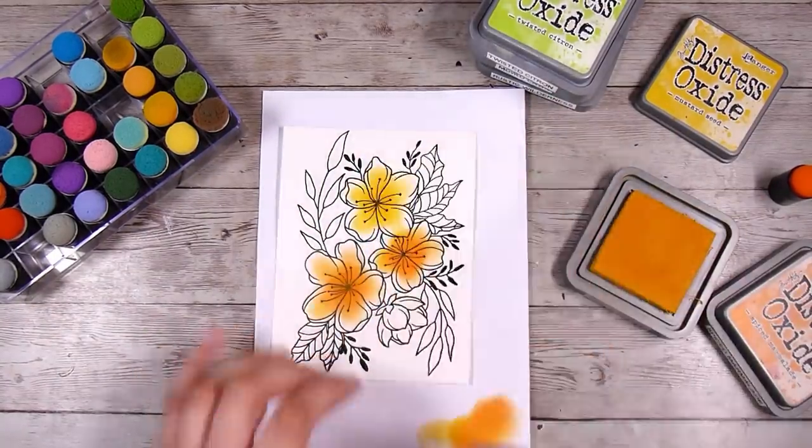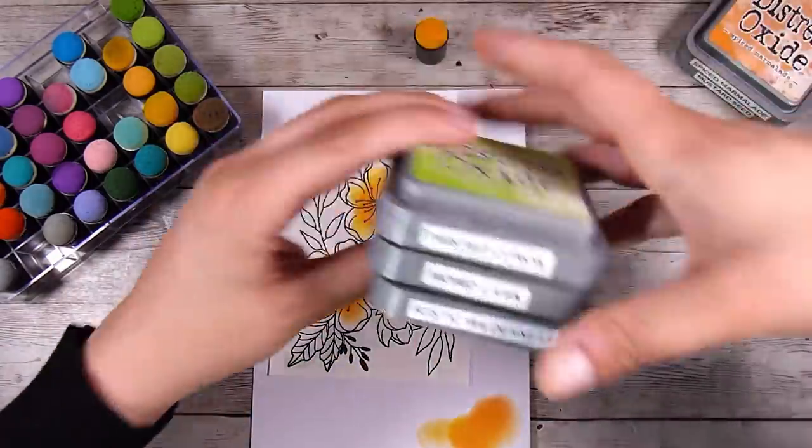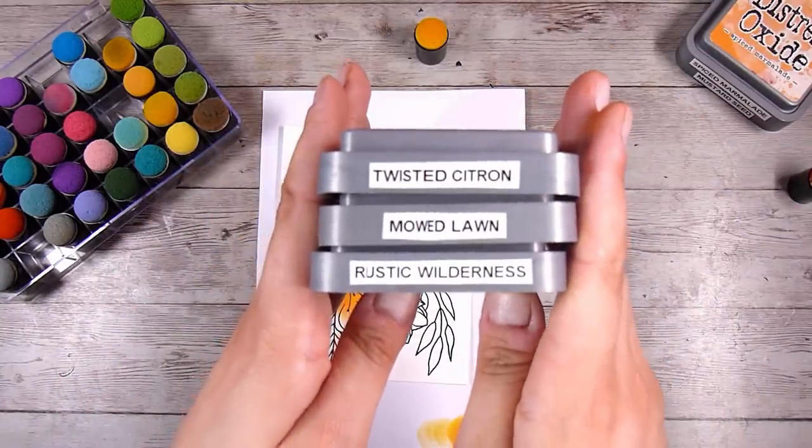And this one at the top, I used a little bit more yellow with mustard seed, but then I decided I wanted it to be kind of a little bit more orangey. So there's some mustard seed around the outsides.